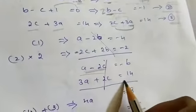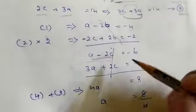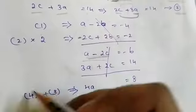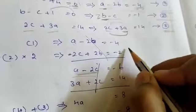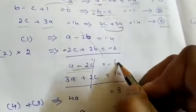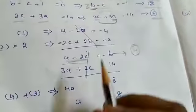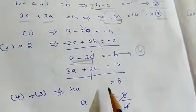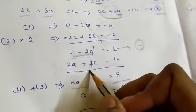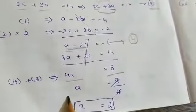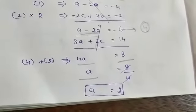So 3A plus 2C equal to 14. When you add equations 4 and 3, you will get 4A equal to 8, so the C terms cancel. Therefore A equal to 8 divided by 4, which gives A equal to 2.